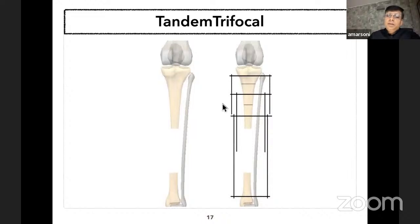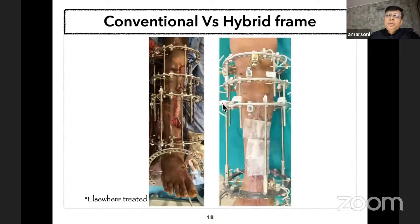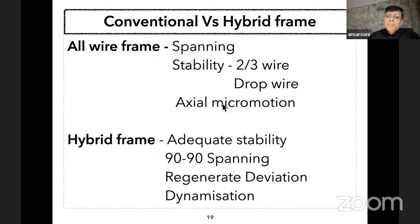I generally prefer a hybrid frame for bone transport. With an all-wire frame, we sometimes get less spanning, and to give more stability beyond two or three wires one has to insert a drop wire, which has significantly less stability compared to a regular wire. The concept of axial micromotion comes post-docking. Instead, I prefer a hybrid frame which gives good stability with adequate spanning of wire and pin, and less chance of regenerate division.